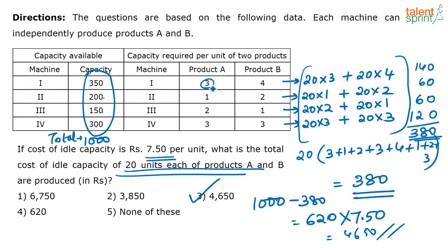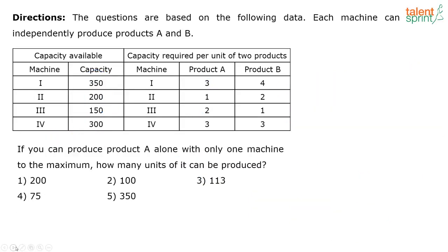In minor calculations, do them mentally - do not waste time writing down every step. I'm explaining step by step here so those who didn't understand can follow, but in the examination avoid writing all this out. Practice mental calculations whenever you study quantitative ability. Next question: if you can produce product A alone with only one machine to the maximum, how many units can be produced?